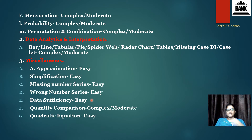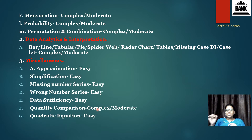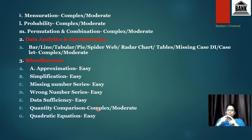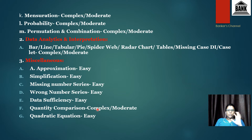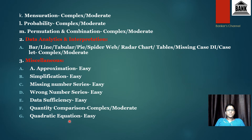Next is quantity comparison. Similarly to data sufficiency, they'll give two statements — they might combine mensuration and probability in one question — and you need to find the answer for both statements and compare whether the first is greater than, less than, or equal to the second. Unlike data sufficiency, in quantity comparison you need to solve both statements to get the answer.